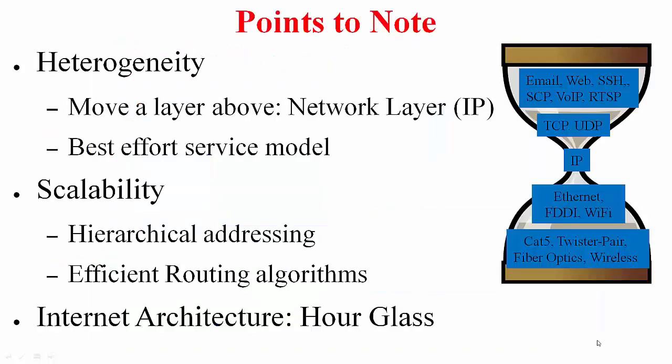So we started out with heterogeneity and scalability. Let me emphasize how the IP protocol handles both aspects. Heterogeneity is handled basically by introducing a new layer—the network layer—above the link layers which handle technology-specific implementations. By having a common IP layer, you are able to interconnect the different networks. And by the fact that you are using best effort service model, the individual characteristics of the technologies do not matter that much anymore. Scalability is handled through hierarchical addressing as well as very efficient routing protocols. We will cover these later, and only then will it become clear how scalability is being handled by the IP protocol.